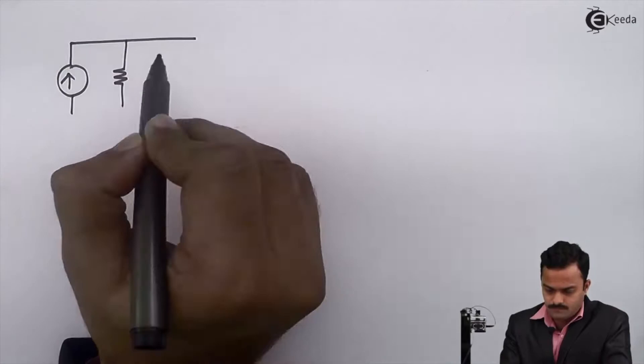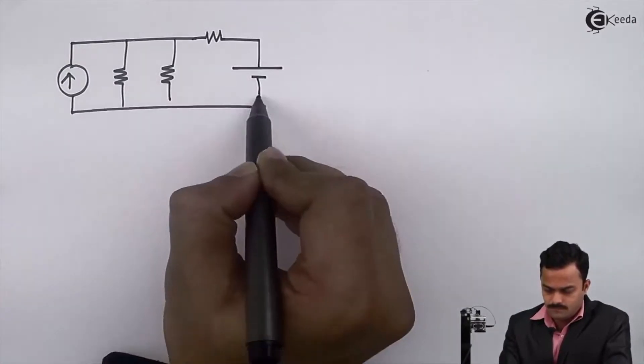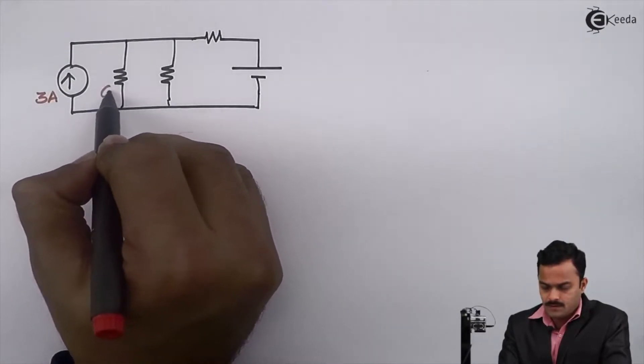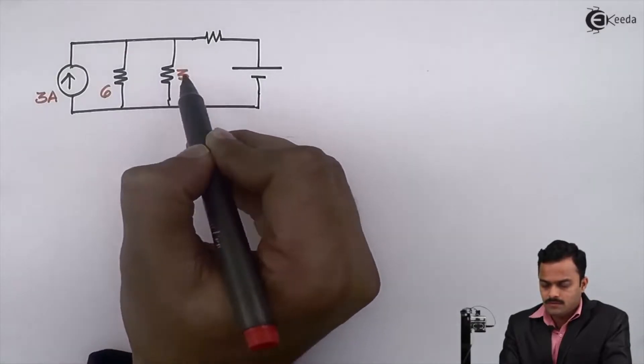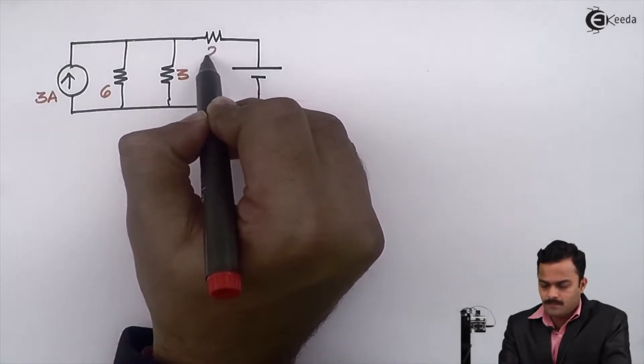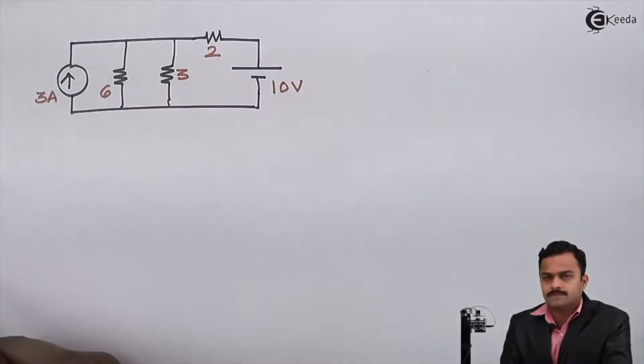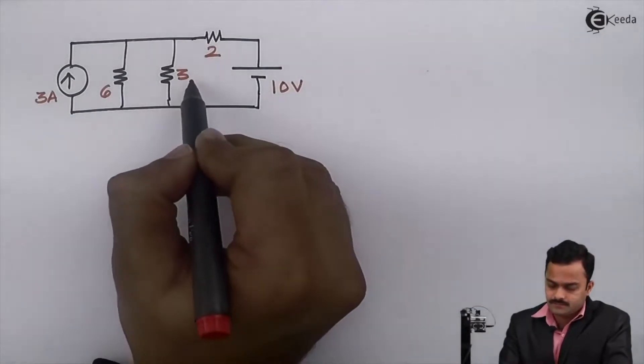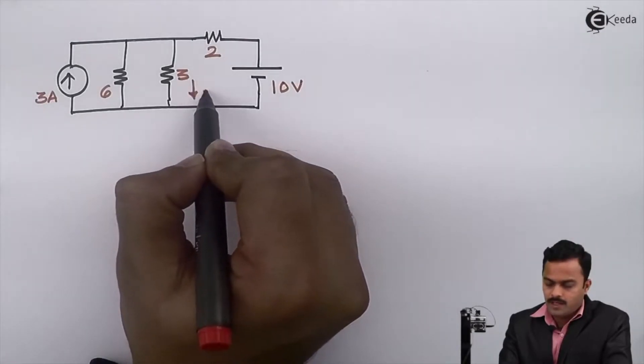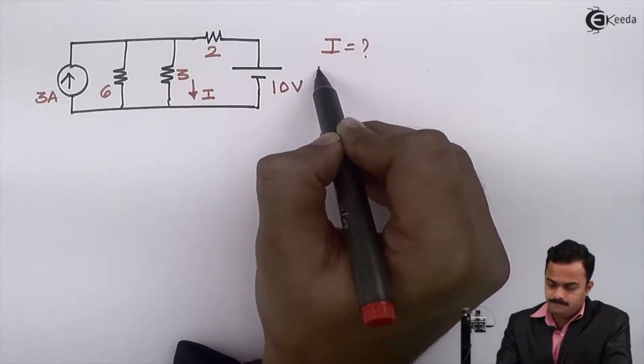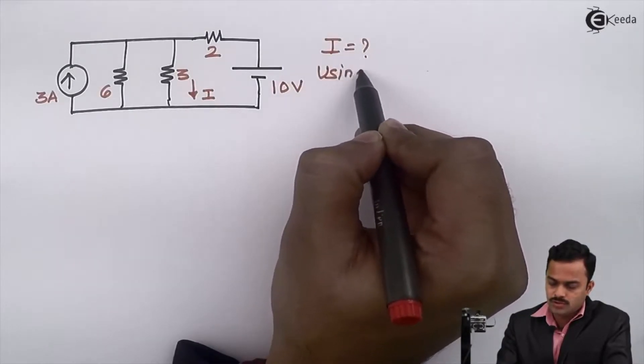So let's take a numerical. In the problem, we have 3 ampere, 6 ohm, 3 ohm, 2 ohm, and a 10 volt battery. The objective is to find out this current I using source transformation.